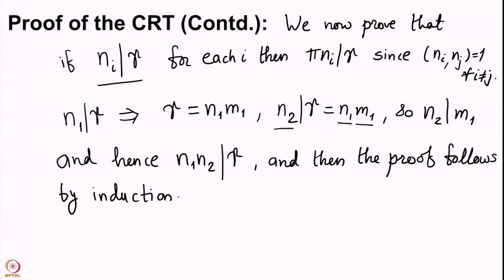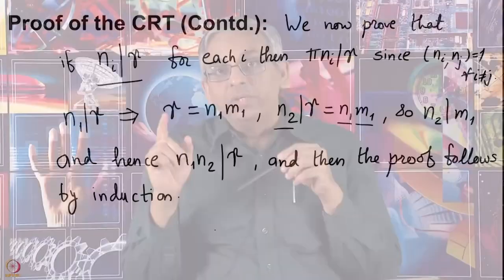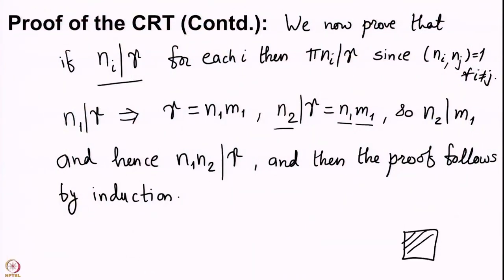The key fact used is the fundamental theorem of arithmetic, which guarantees that the prime factorization is unique with uniquely determined powers. We have now completed the proof of the Chinese Remainder Theorem: we proved existence of a solution via special cases of simultaneous congruences, and we proved uniqueness modulo n. Now we try our hand at some problems. We look at this particular problem to begin with.